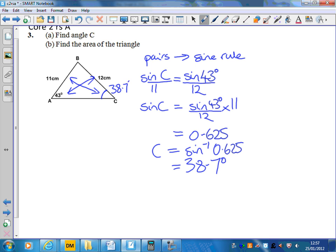Now we know C is 38.7. The second part of the question is we're being asked for the area of the triangle. To find the area of the triangle I need two sides and the angle between them.